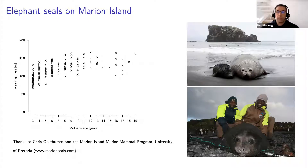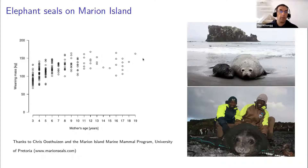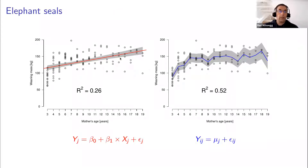I'm going to demonstrate these two problems with an example. This is a data set from Chris Oosthuizen about elephant seals on Marion Island — we're looking at weaning mass of seal pups in relation to the mother's age. Mothers ranged from 3 to 19 years old and weaning mass tends to increase with age. I simulated the data set so we can see what happens if we fit the same models to two different data sets from the same process.